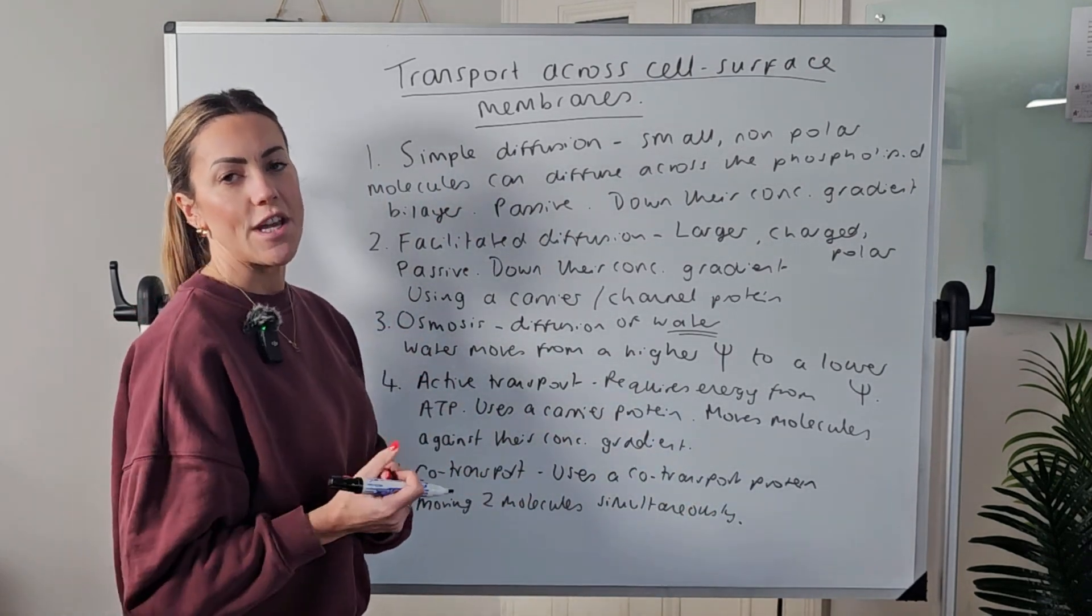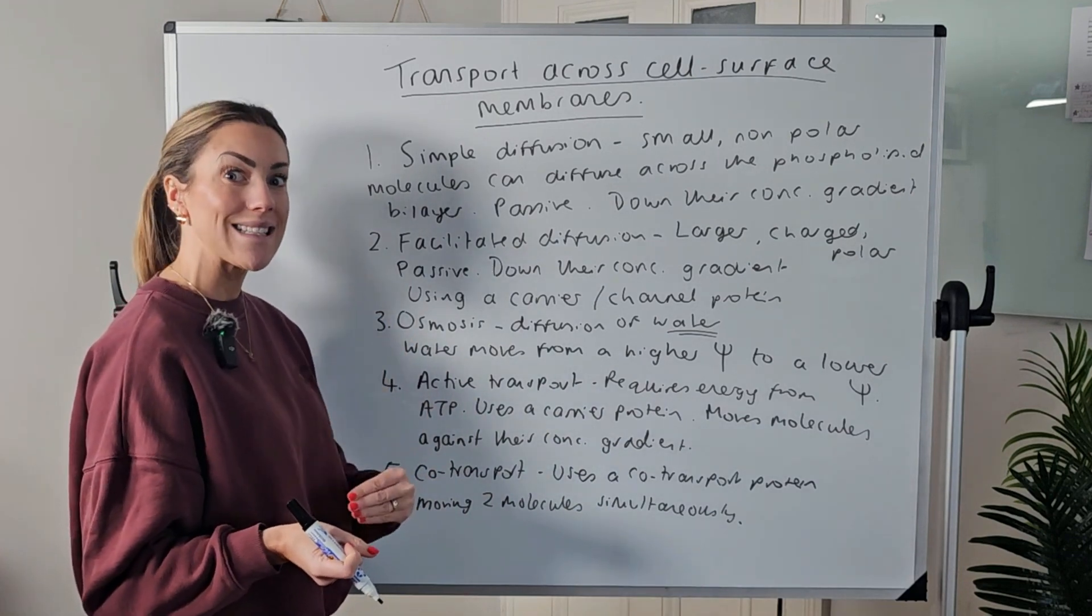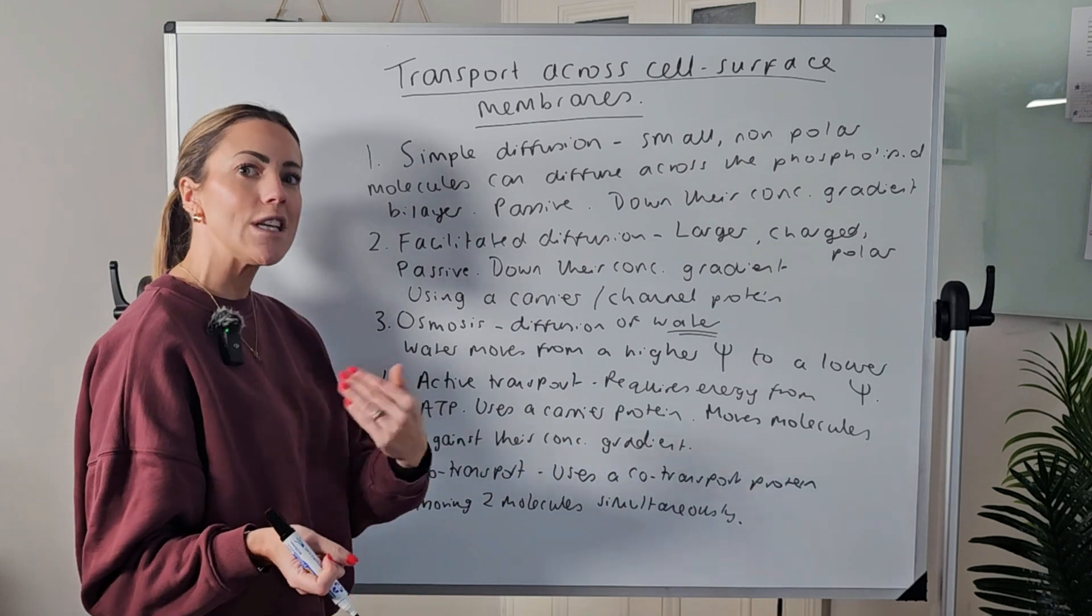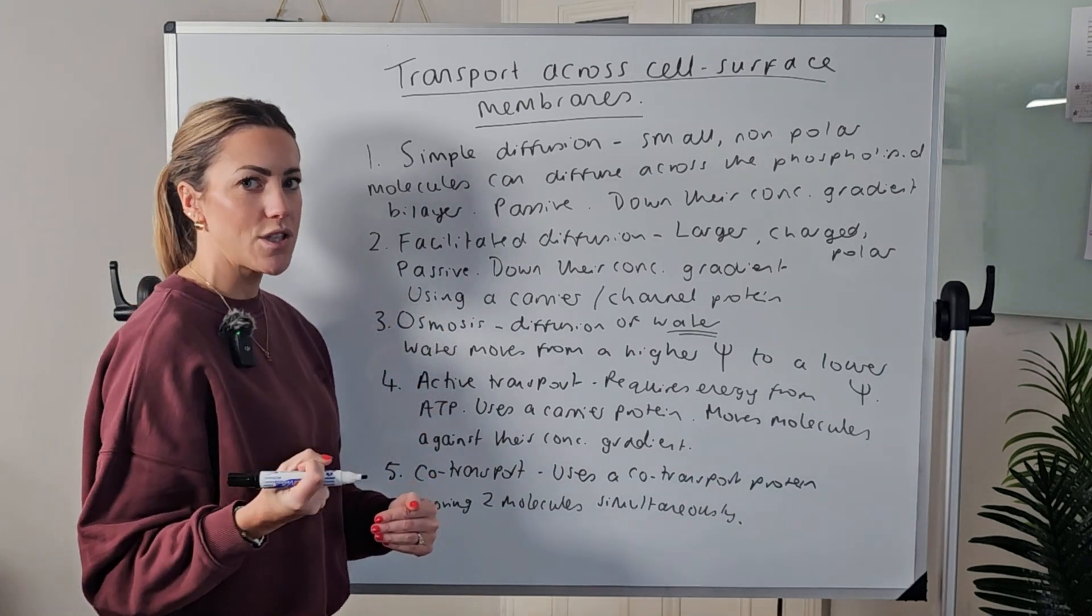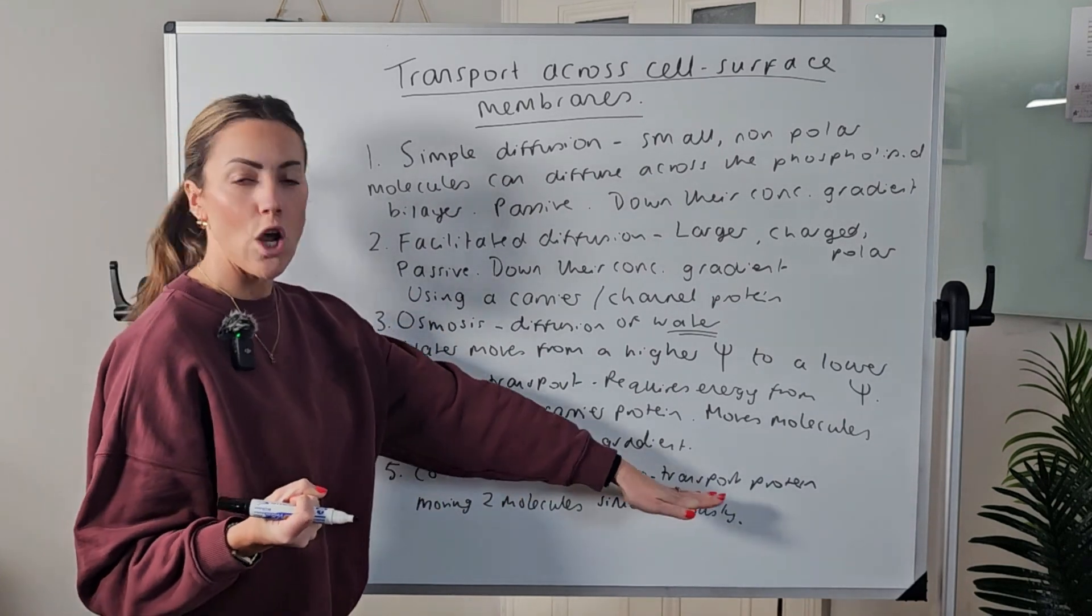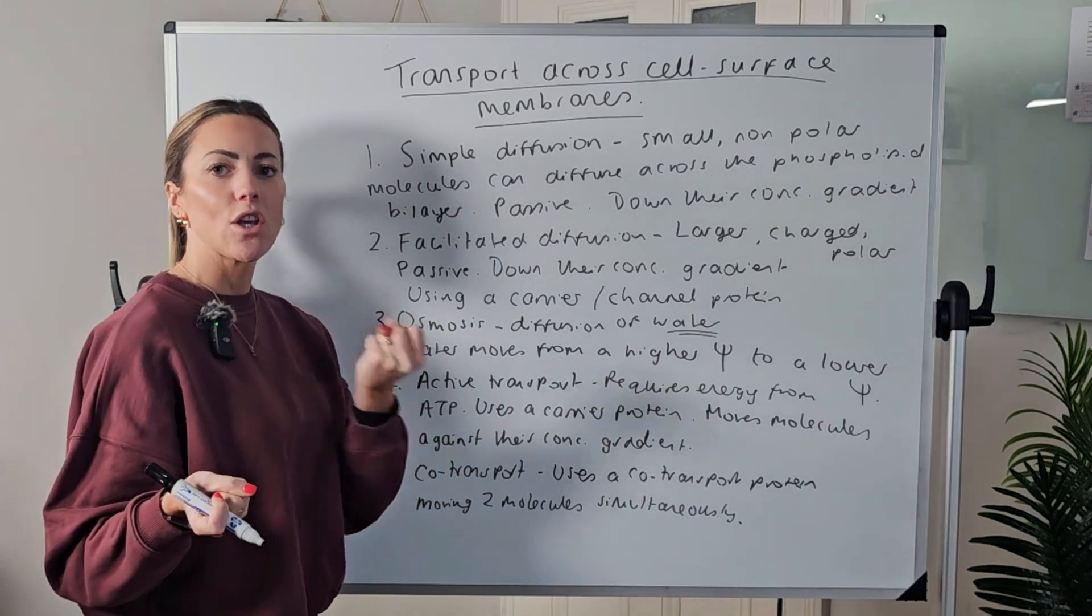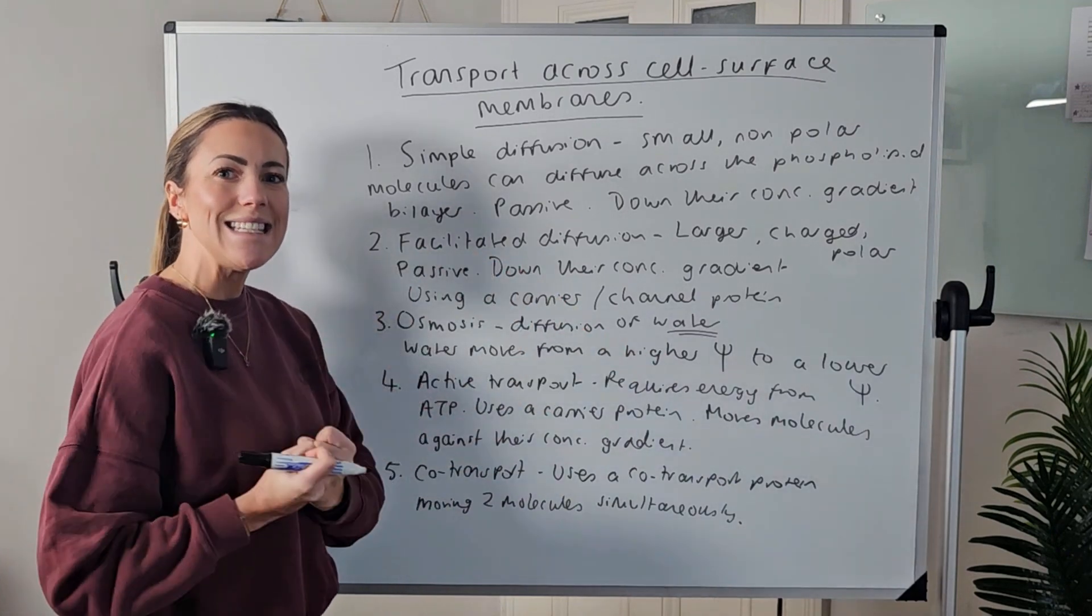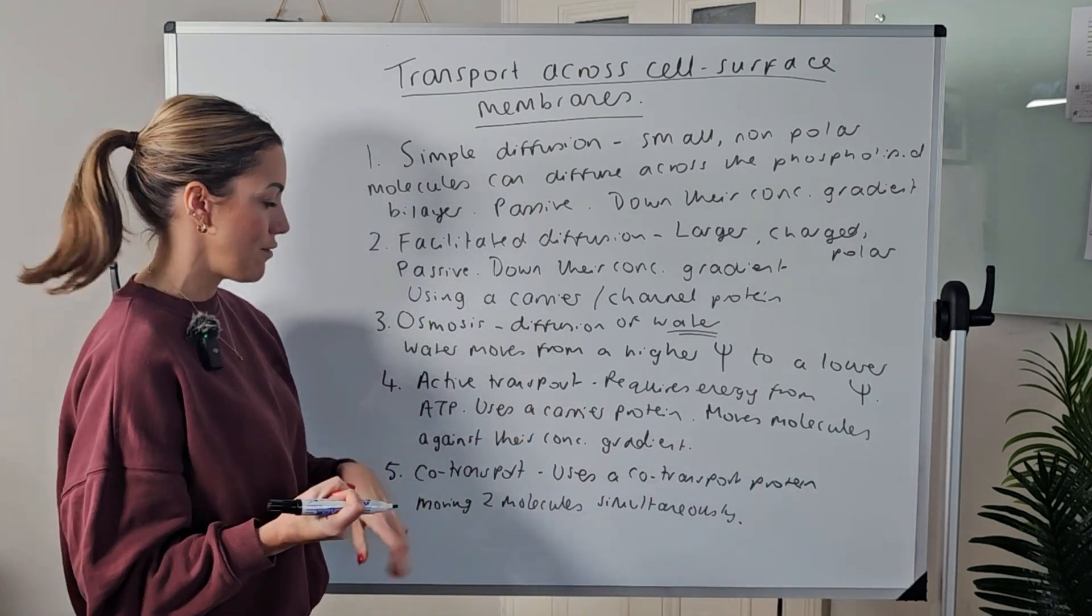For example, when you learn about absorption in the ileum of the small intestine, you'll learn about how glucose and amino acids are absorbed via co-transport, where a sodium ion diffuses in down its concentration gradient through a co-transport protein, carrying with it a molecule of glucose or an amino acid. So they are moved into the cell together via a co-transport protein - that's why it's called co-transport.